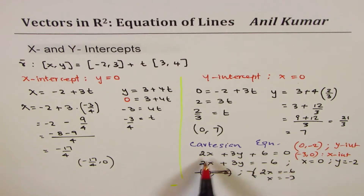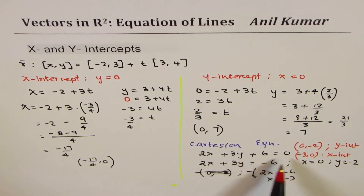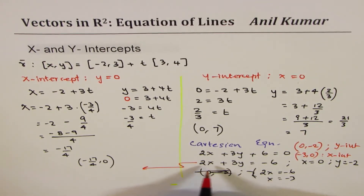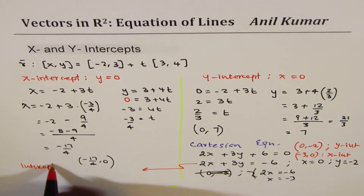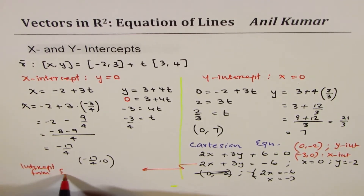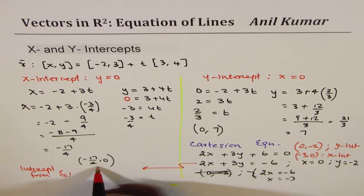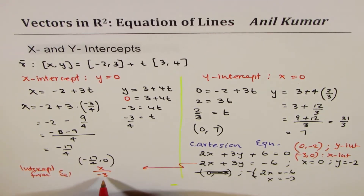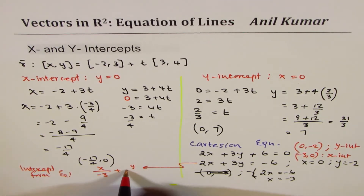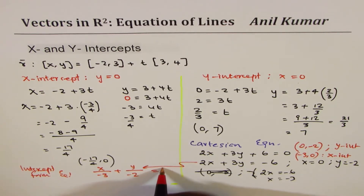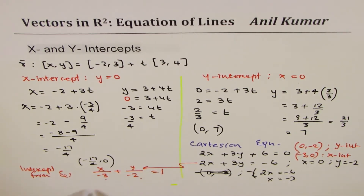When you're given the Cartesian form, it's quite simple. You could also see this by rearranging and dividing by minus 6 — that gives the intercept form of the equation learned earlier: x over minus 3 plus y over minus 2 equals to 1. So these are your x and y-intercepts directly. You can find them in different ways.